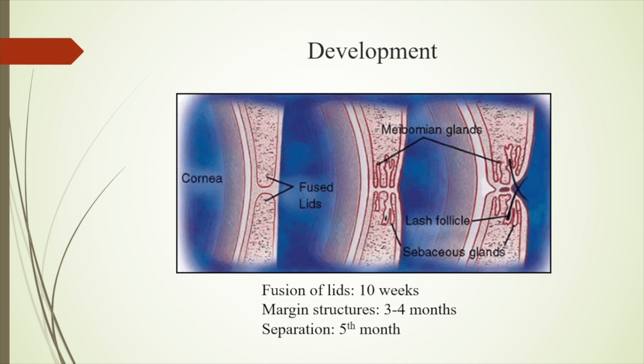Initially, there is fusion of the lids at 8 to 10 weeks of gestation, and the margin structures develop at three to four months. These fused structures separate at the fifth month of gestation, forming the actual lids.